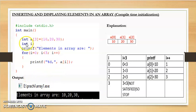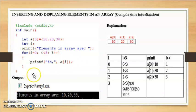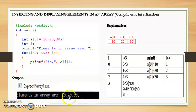So this is how we insert values using compile time initialization and display the values using a for loop. The output of this code will first print 'Elements in the array here', and then print the values 10, 20, and 30 separated by commas, because after the %d we have put a comma.